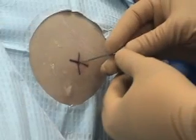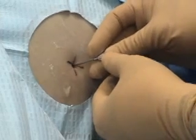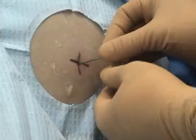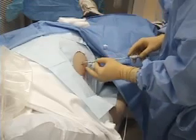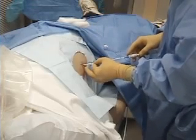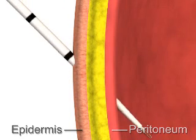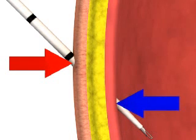Begin by making a small puncture in the skin with either a scalpel or a large gauge needle to facilitate advancement of the paracentesis catheter. Next, advance the catheter through the epidermis. In this video, we will demonstrate an angular entry technique in which the cutaneous site of insertion does not directly overlie the site of penetration into the peritoneal cavity.